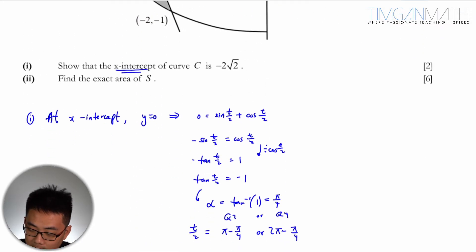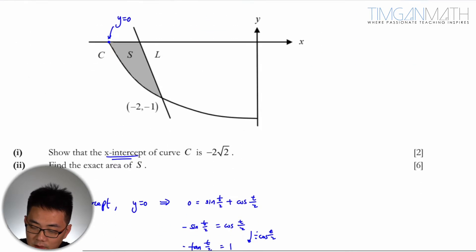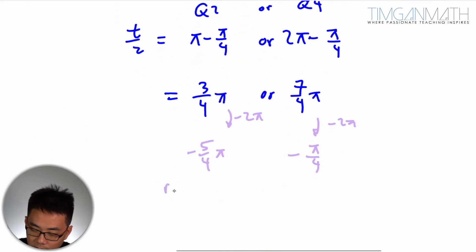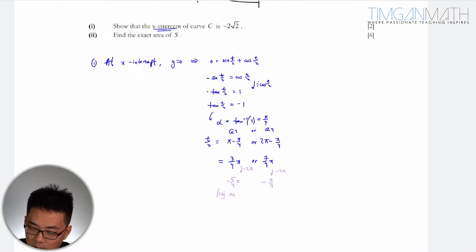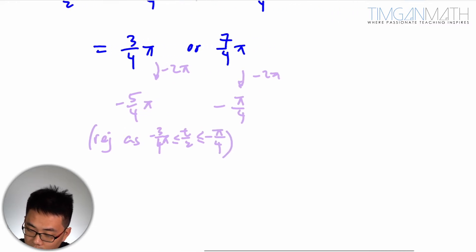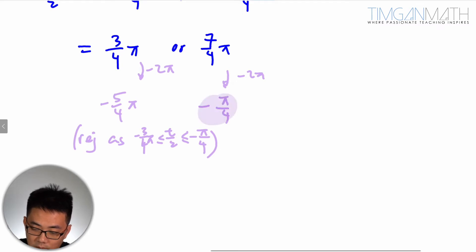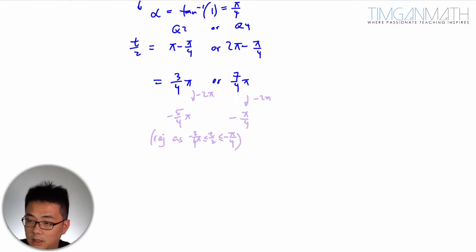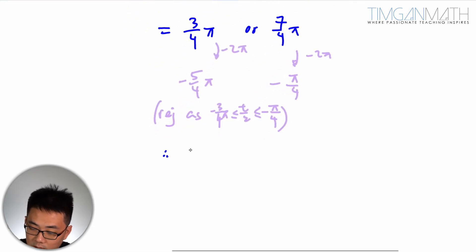Okay. So -5π/4 is obviously not within this range here. Okay, reject as t/2 is between -3π/4 and π/4. Okay. So in other words, we need this one here, this is what we need. In this case, hence t/2 equals -π/4 and t equals -π/2.